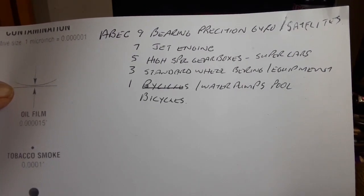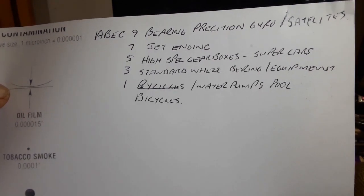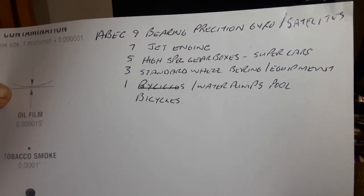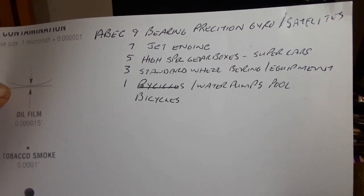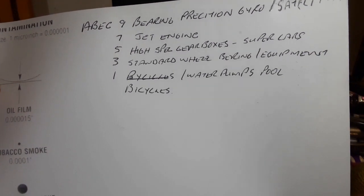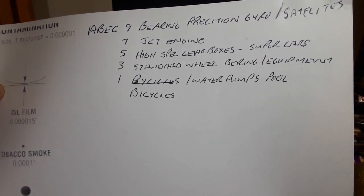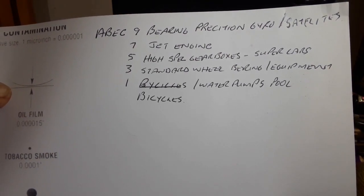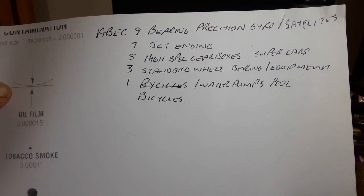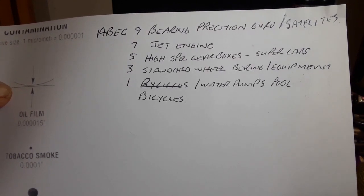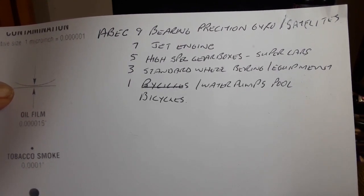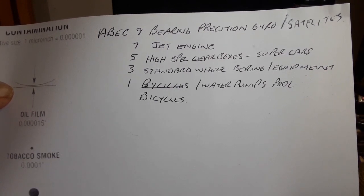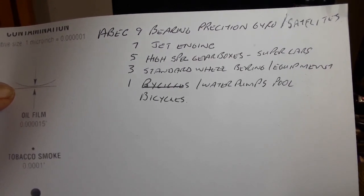ABEC 5 would be found in high-spec gearboxes and supercars in that class. ABEC 7 is typically what you find in jet engines, where everything needs to be precise, balanced, and well-maintained.